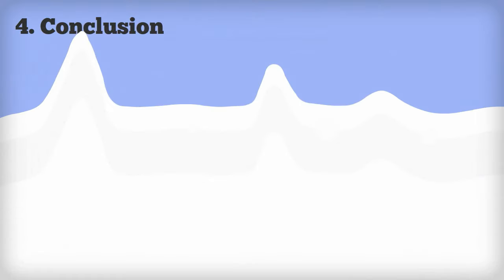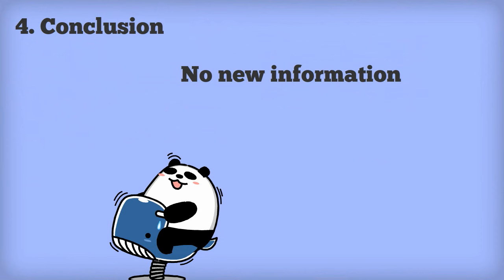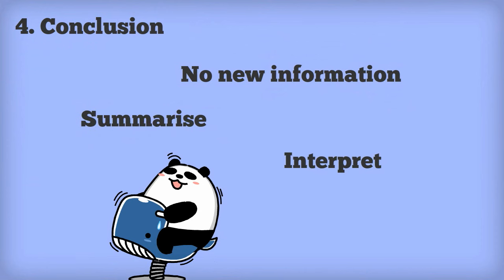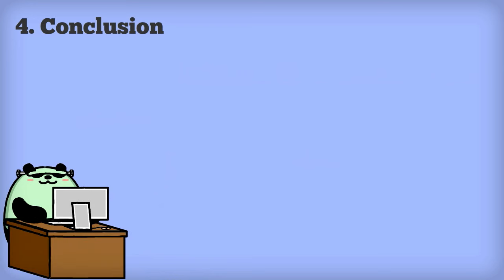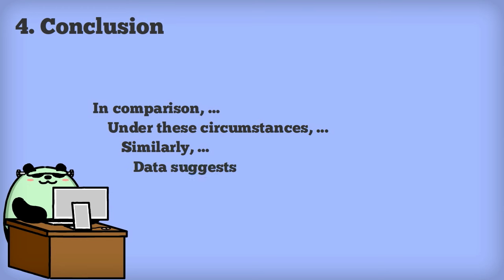Remember, we don't put any new information in the conclusion. We're just summarizing and interpreting the information we already have. We need to show how the information we presented affects the aims from our introduction. During this part, we can use a wide variety of language styles — this is one of the parts where we really put our own mark on our work. We still need to keep to an academic style, but we can give it our own voice.